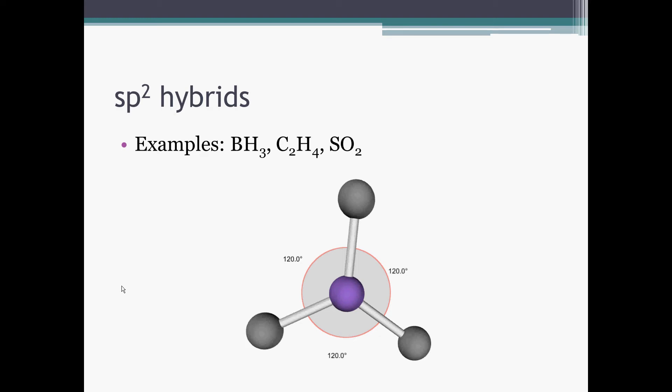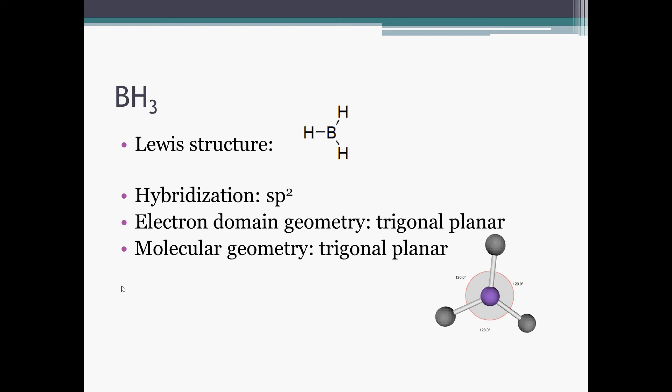There's a variation on this. We can see in something like boron trihydride, BH3, we see a boron with three single bonds to hydrogens, and we see the traditional trigonal planar arrangement.